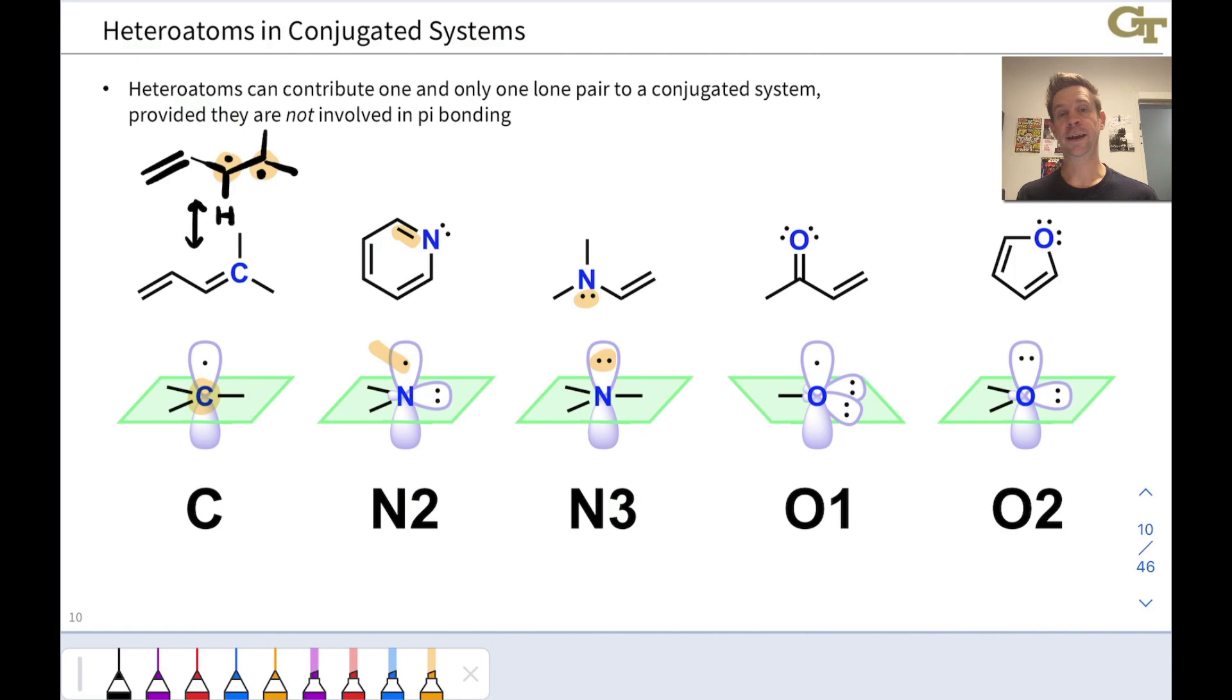The O1 is what we'll call in the future a carbonyl oxygen. It's an oxygen connected to one atom, typically by a double bond when neutral. And notice, here again, that oxygen in the orbital picture has one electron in a p-orbital. And that one electron is one of the two electrons in this pi bond right here, the other one coming from the carbon right here. So this oxygen is contributing one electron to the conjugated system.